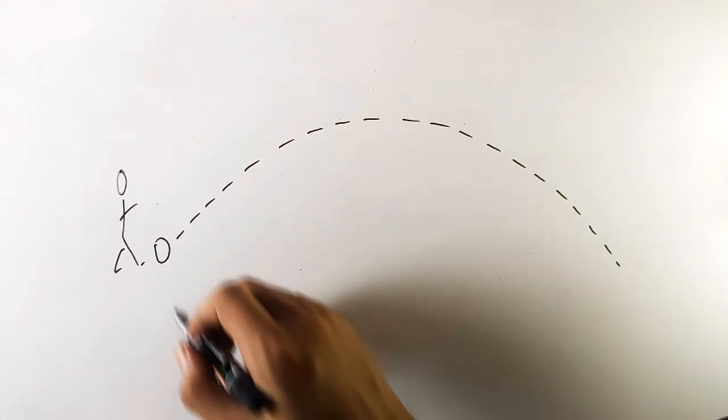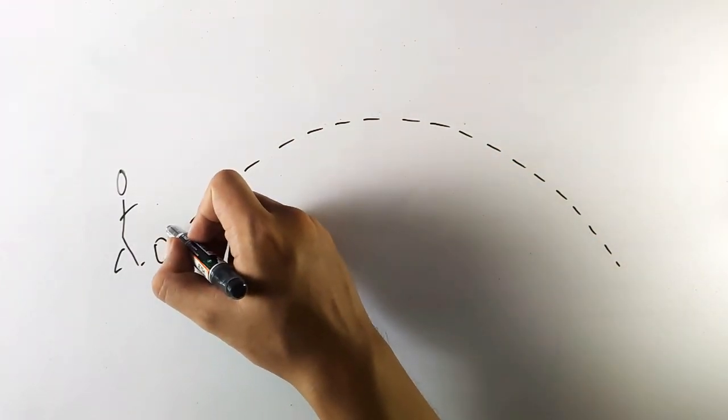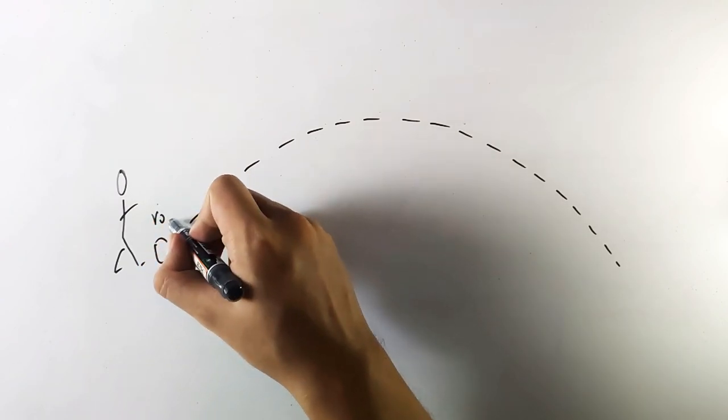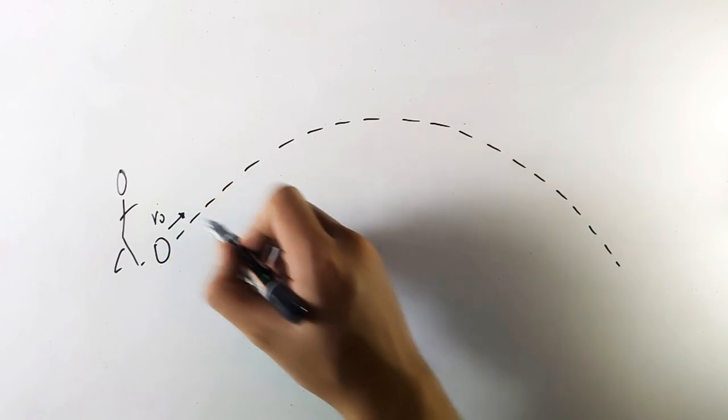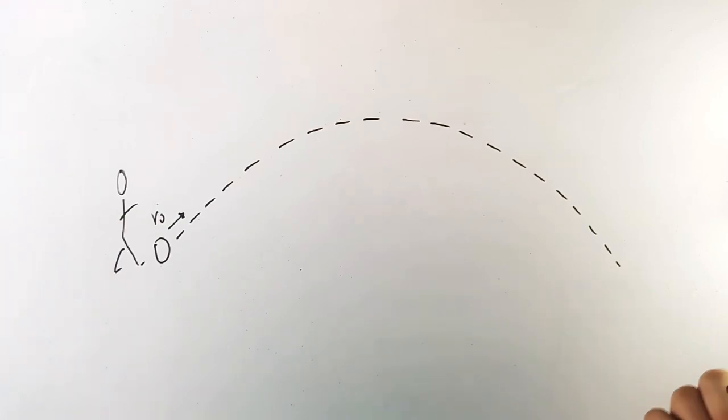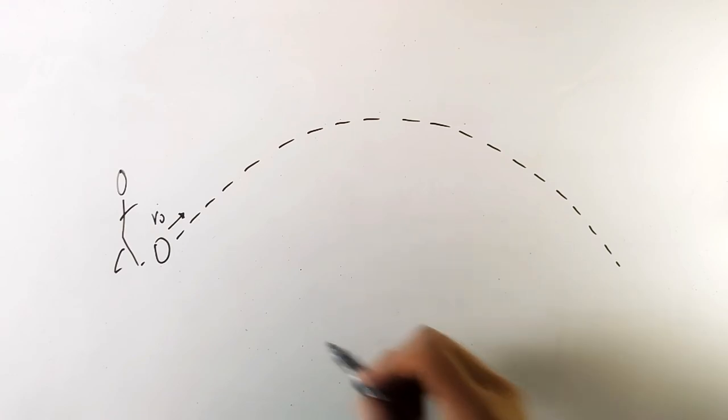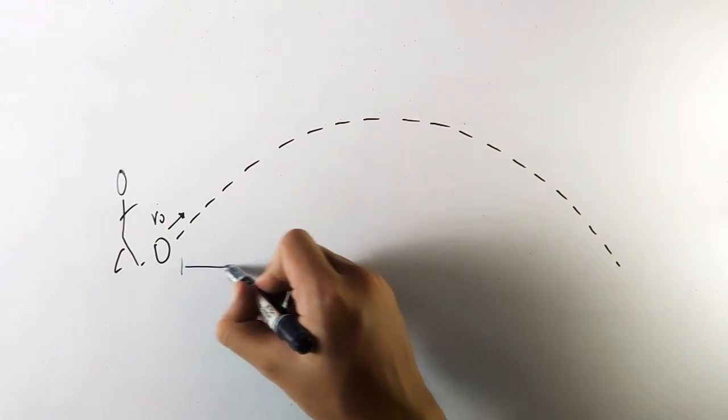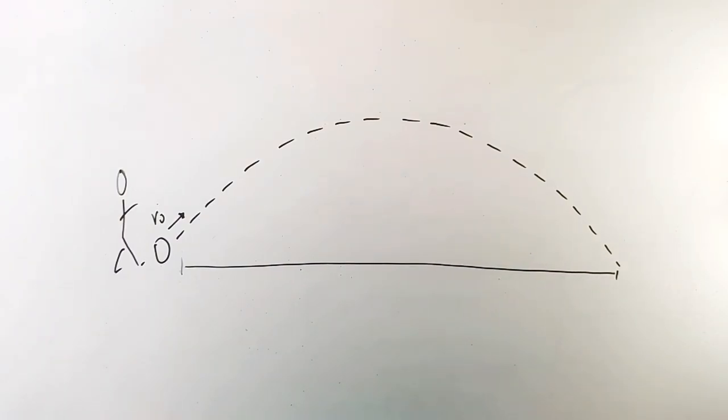This particular path, starting from here, this is your v sub 0, going to this direction. This motion is projectile motion. The distance starting from here going to the other end is...